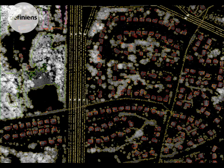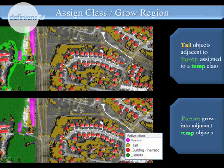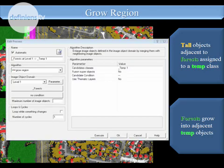The red objects are the building footprints segmented based on the thematic layer, but look how well that pulls out the tree canopy. Unfortunately, it also does a great job of identifying power lines, so I've got a situation to deal with. But first, let's work with the buildings. Tree canopy is what I'm after, so if a building is under tree canopy, I want to call it tree canopy. I'll run a simple rule using a class description — if you're a building with a high NDVI and a high border to existing tall objects, assign to a temp class, then use reach-and-grow to remove those temporary objects.